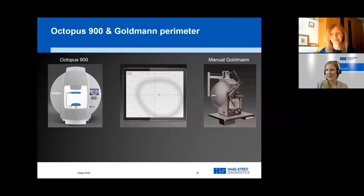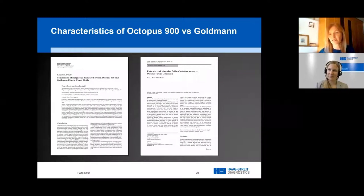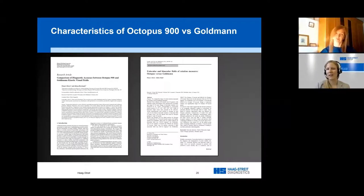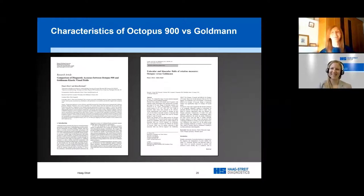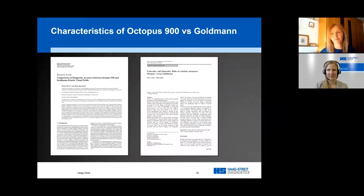Of course, the templates can be automatically stored and pulled out. You can use customized templates already made available for the Octopus, or create your own very easily. I sometimes hear the argument that an automated kinetic perimeter can never offer the same as a manual Goldman perimeter. Would you agree? No, I don't agree. I've been able to use the Octopus in pretty much the same way as I used the Goldman — and bear in mind I'd been using the Goldman for 20 years before the Octopus 900 came along.